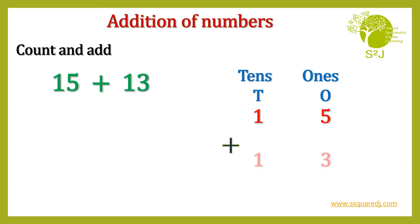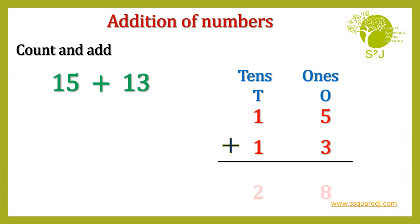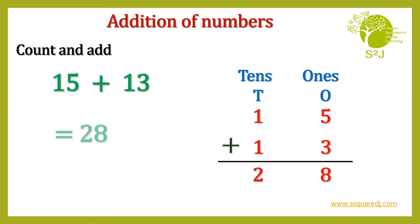Let's arrange 13. 3 in 1's place and 1 in 10's place. Let's add them. 5 plus 3 is 8 and 1 plus 1 is 2. So 28. So 15 plus 13 is 28.